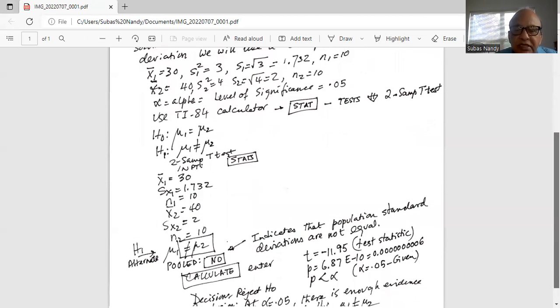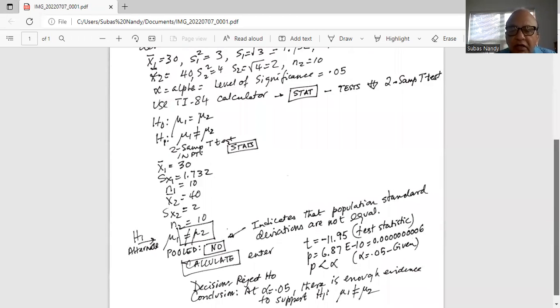The test statistic t is minus 1.95. P is 6.87 E minus 10, exponent minus 10. Remember p-value cannot be greater than 1. So it cannot be 6.87. There has to be something at the end which is E minus 10.